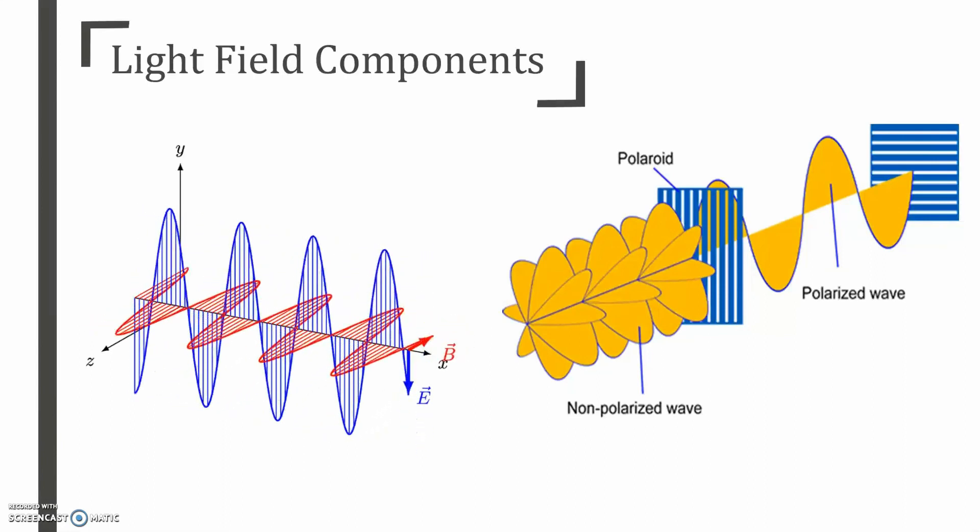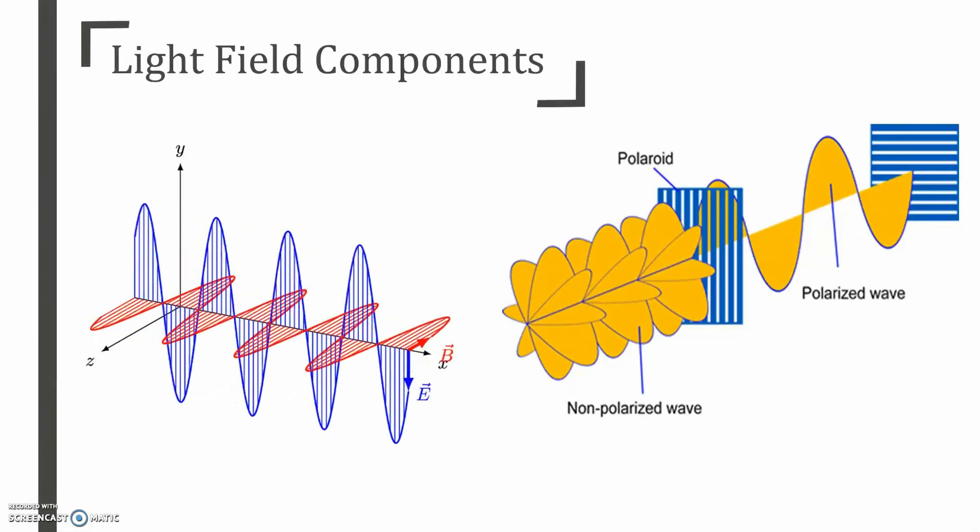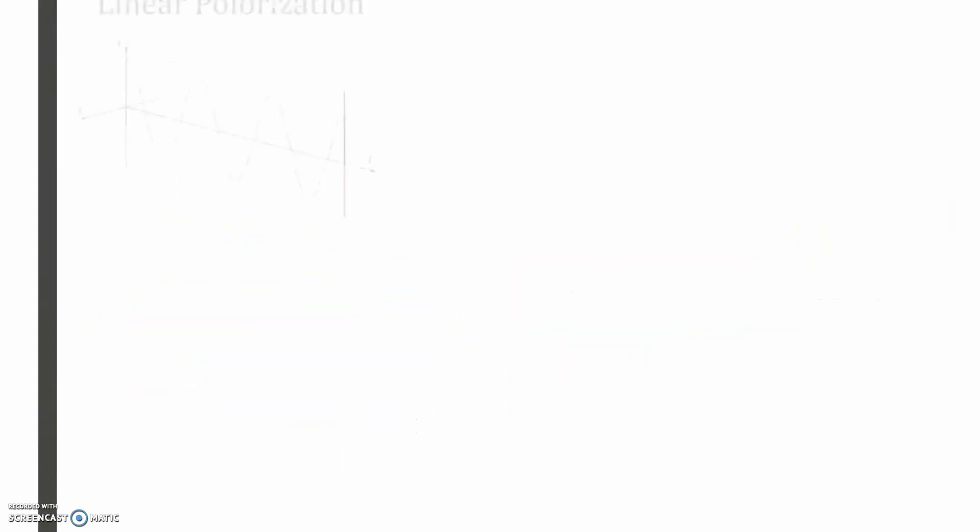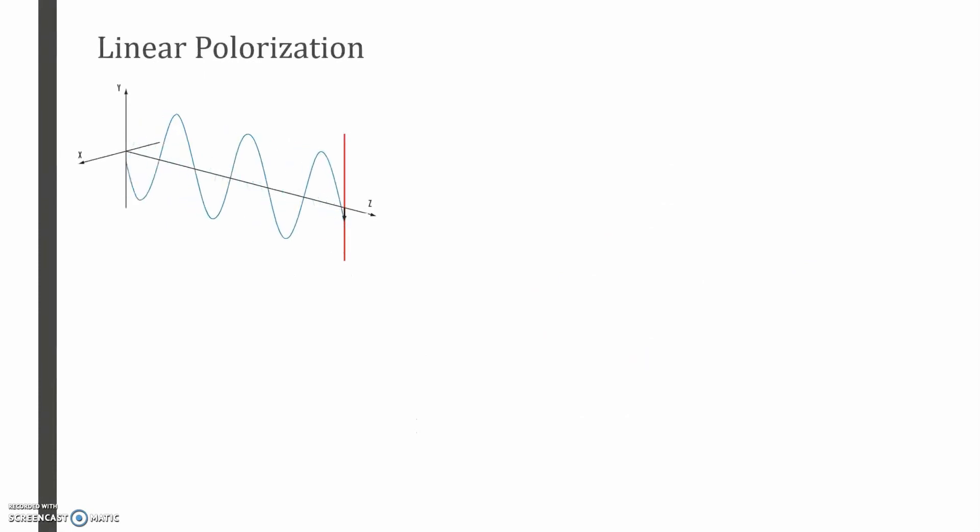When light is polarised, these two components propagate with a specific phase in amplitude. We can classify polarised light into three types. When light is linearly polarised, the electric field is confined to a single plane along the direction of propagation. This can be horizontal or vertical.